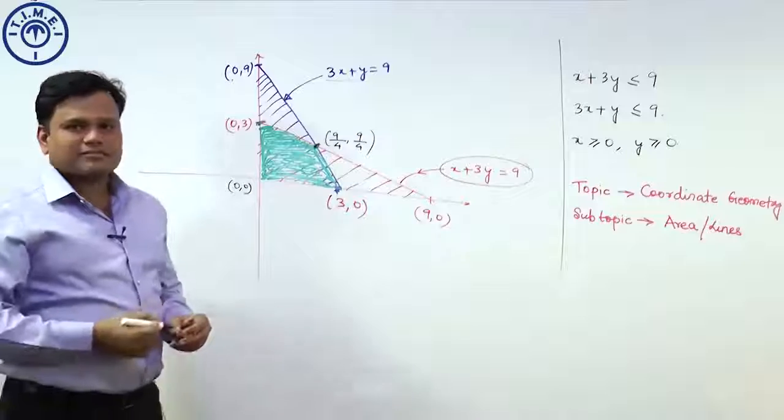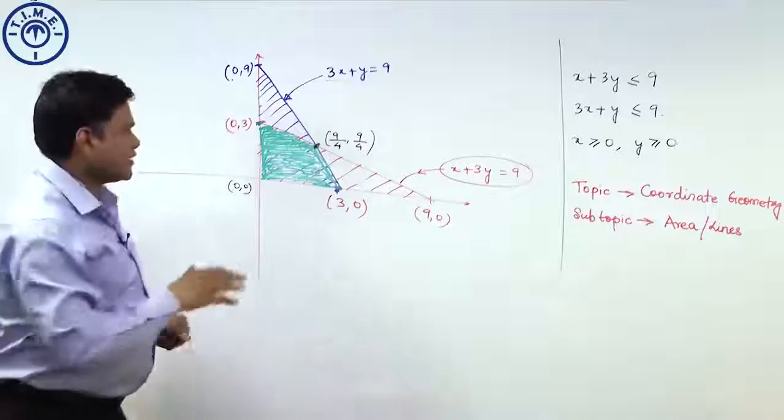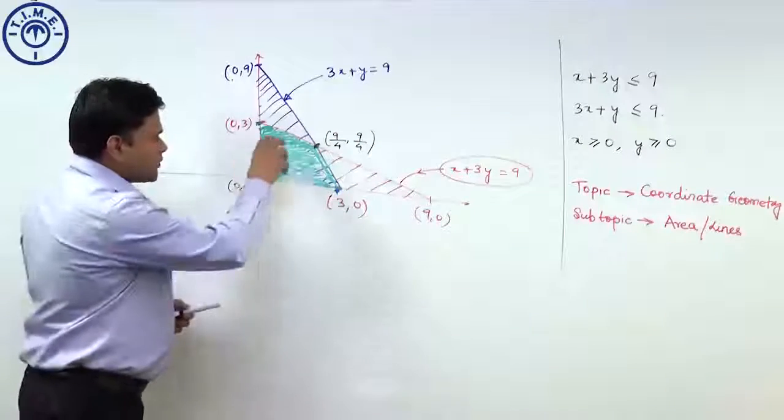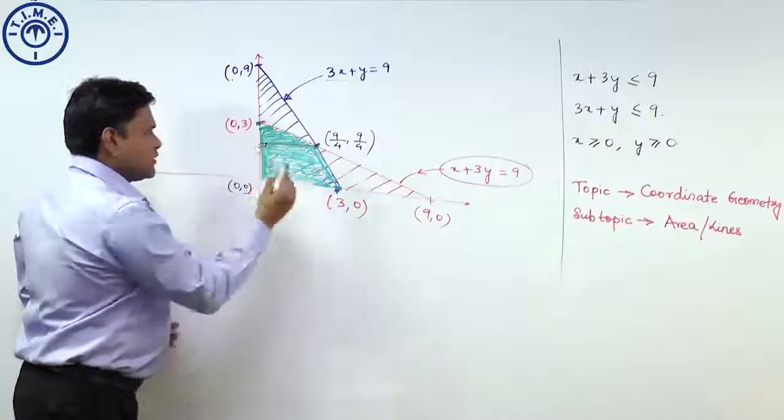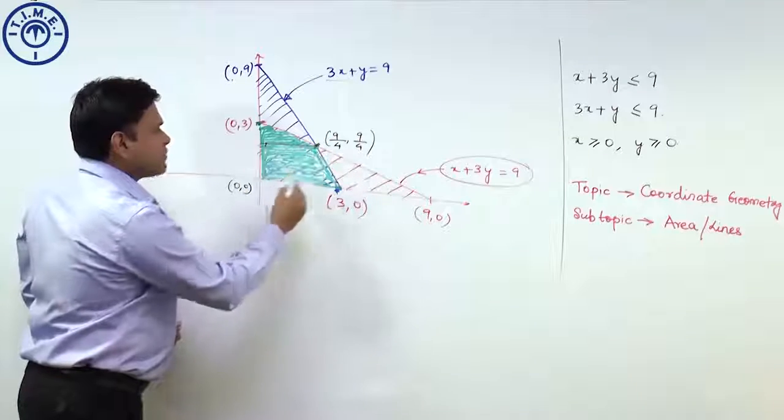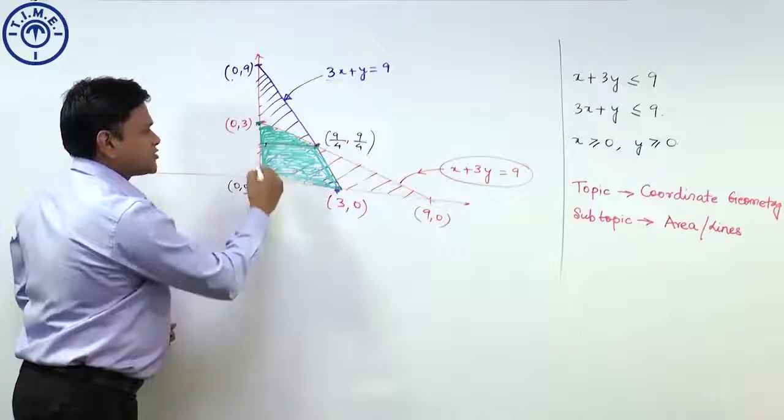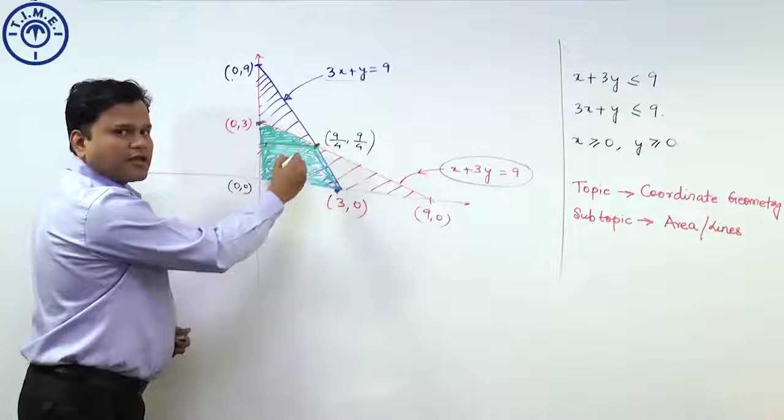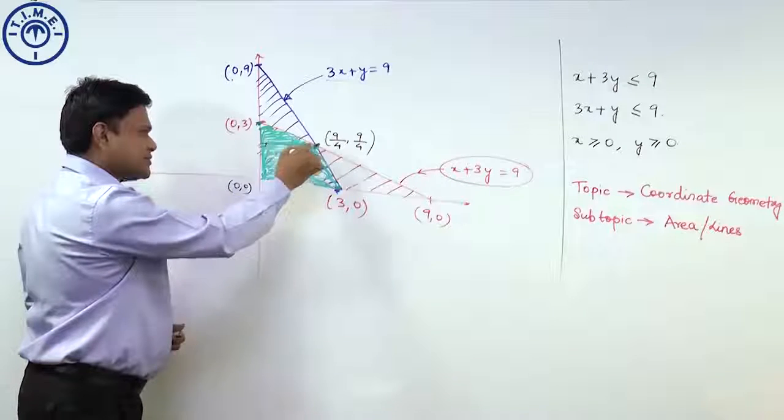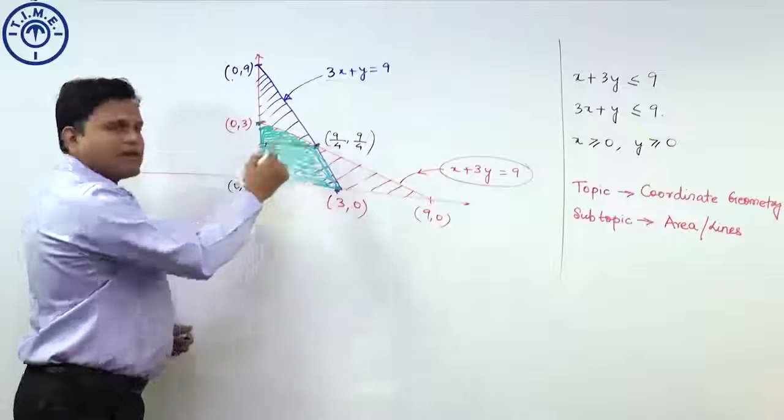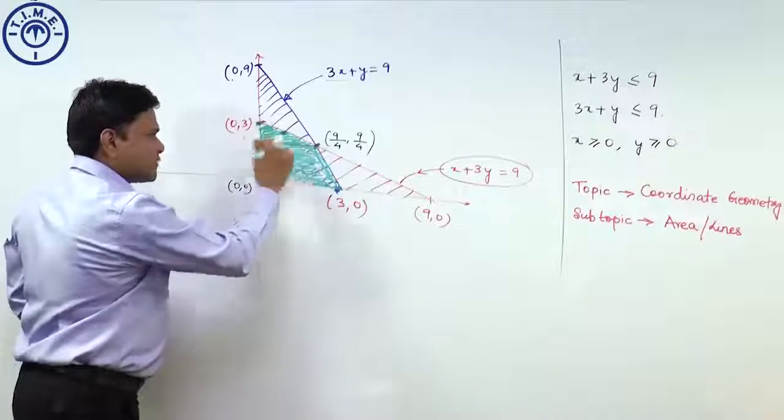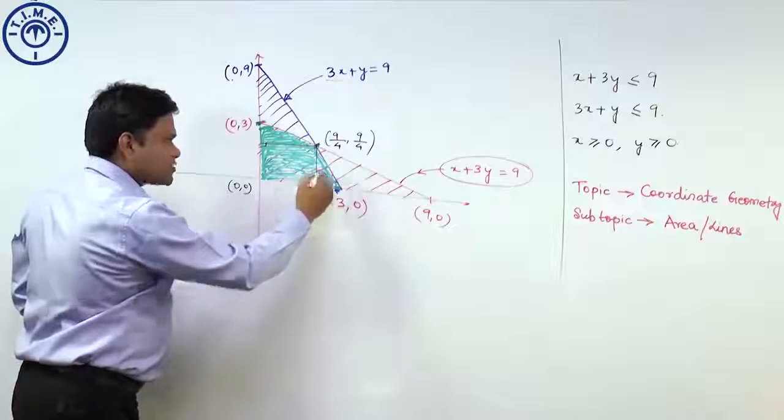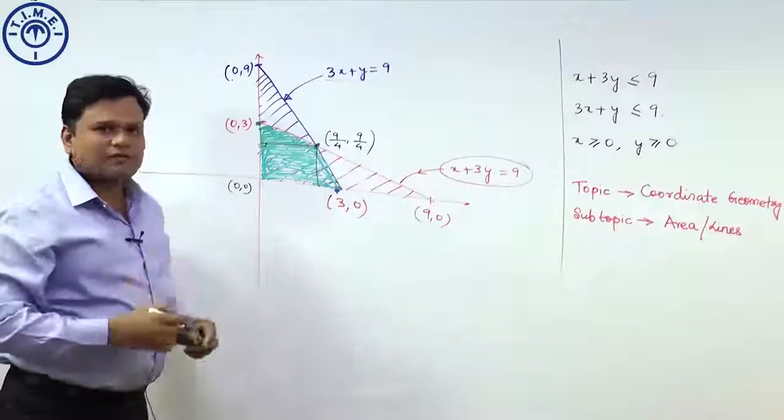At this stage there are many methods by which you can proceed and find out the area. Method number 1: in a scenario like this, if we drop this perpendicular, then we can see that this is one part, a trapezium for which you can find out the area of the trapezium, and then this is the area of the triangle. Area of the triangle can be obtained by taking half base into height. We know this height here which is 9 by 4 and this also we know which is 9 by 4. That is one method we have.